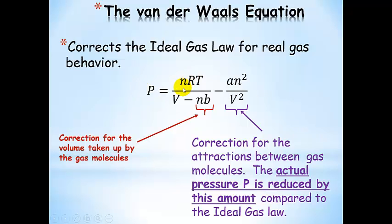We can look at this equation as a correction of the ideal gas law. The total volume of the container minus the term nB accounts for the amount taken up by the gas molecules, using Van der Waals constant B. The term a·n²/V² is the pressure subtracted off because the gas molecules are attracted to each other — the actual measured pressure is reduced by this amount compared to what we'd get using the ideal gas law.